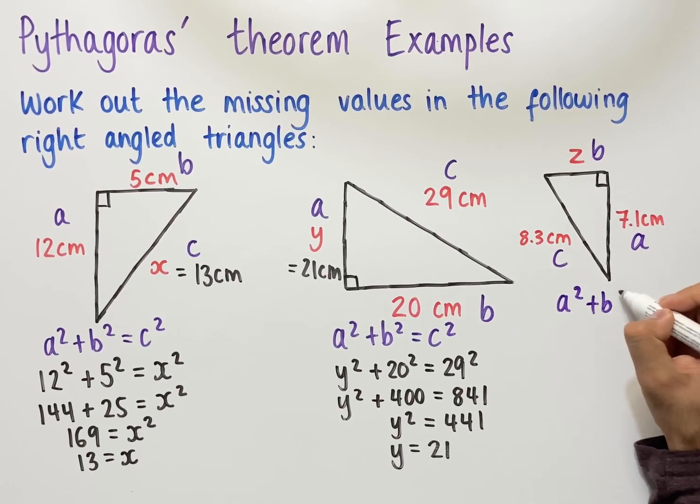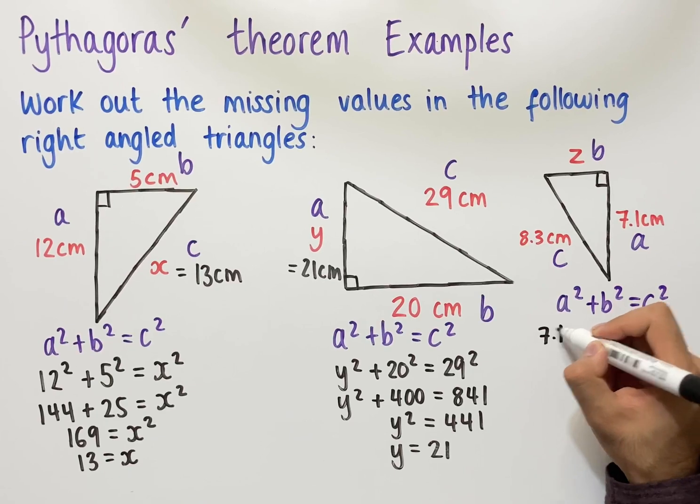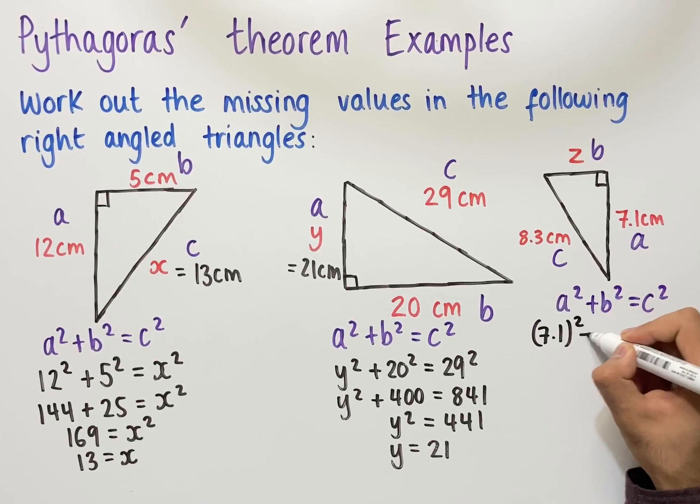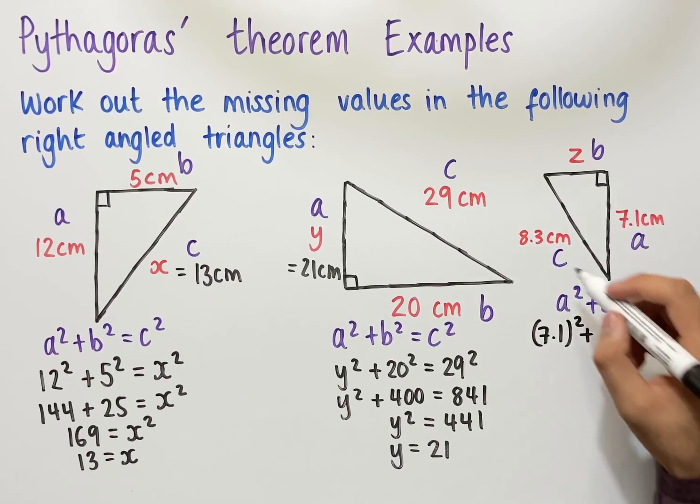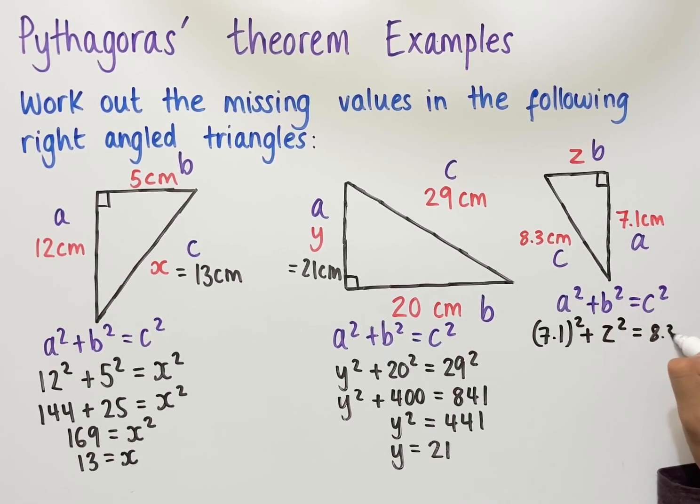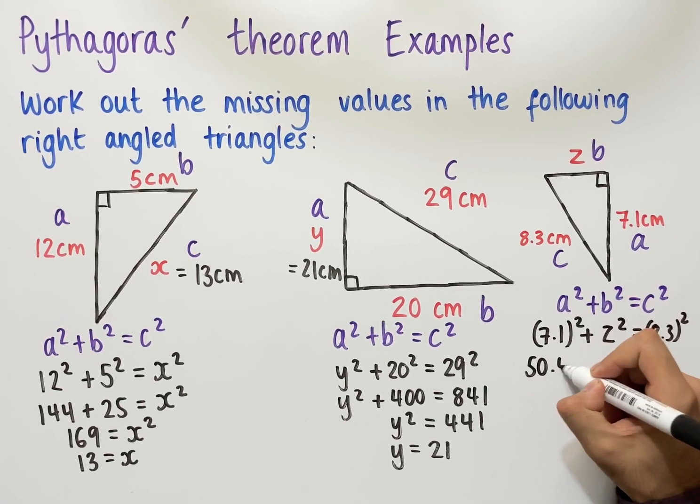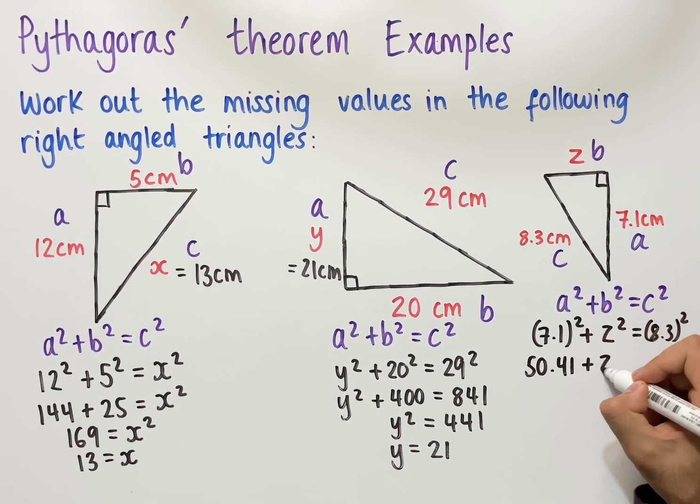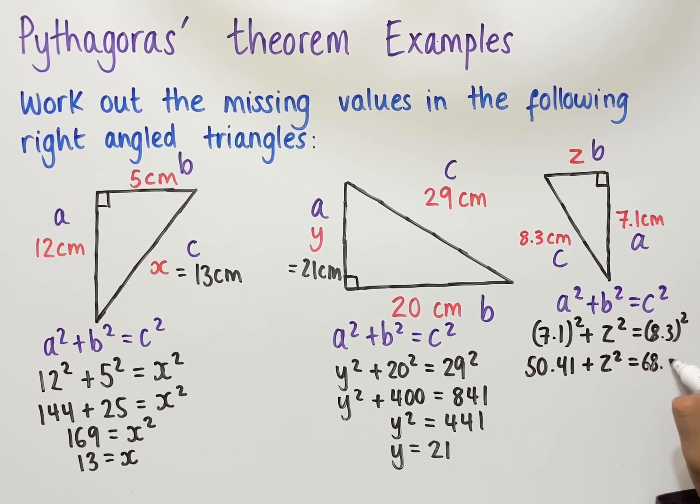Using Pythagoras' theorem, so a squared plus b squared equals c squared, we get the following. We have 7.1 all squared plus z squared equals 8.3 all squared. Now, if we square 7.1, we end up with 50.41, and that is added to z squared, which equals to, so 8.3 all squared is equal to 68.89.